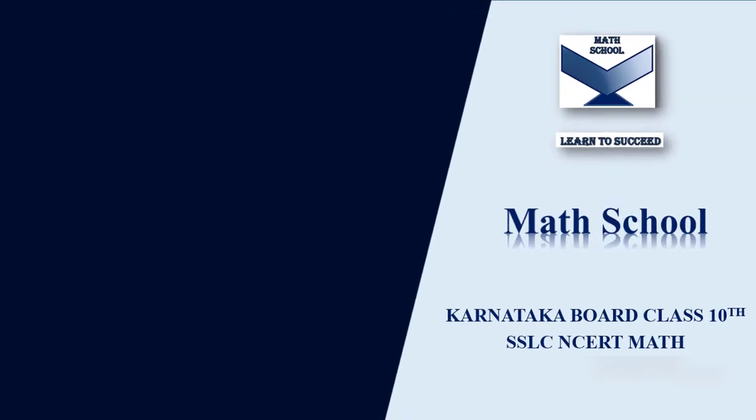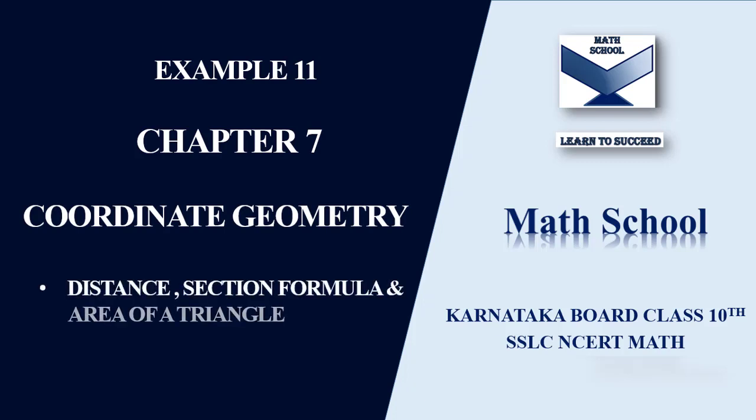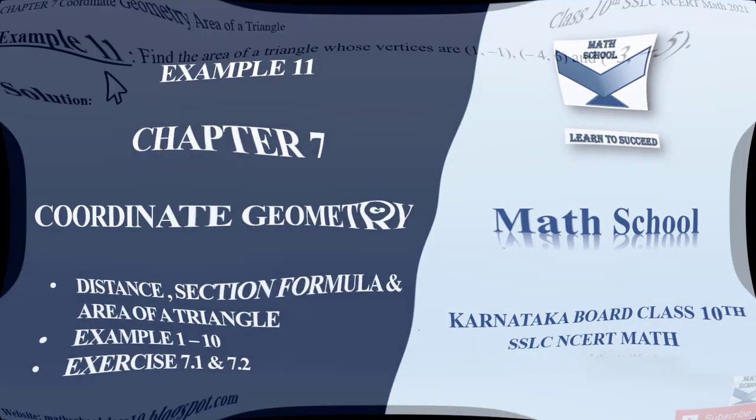Welcome back to my channel Math School. In today's video, let us solve Example 11 from Chapter 7, Coordinate Geometry. In my previous videos, I have completed the distance section and area of a triangle formula, Examples 1 to 10, and Exercise 7.1 and 7.2 from the same chapter. If you have not watched these videos, find the link in the description box below or click the i button above. So now, quickly let us begin with the video.